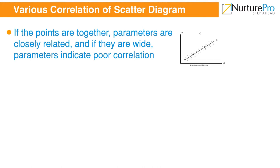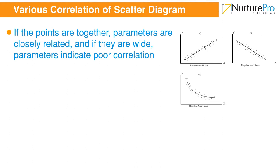Chart B shows a negative linear relationship as the data points are scattered in a straight line and the slope of the line is positive. Chart Z shows a negative nonlinear relationship as the data points are scattered along a curve and the slope is negative. Chart D shows no relationship as there is no apparent pattern.